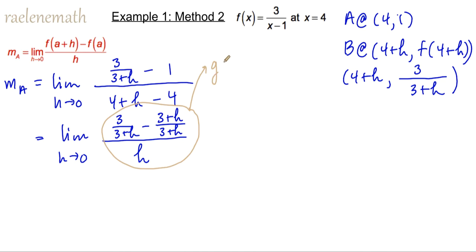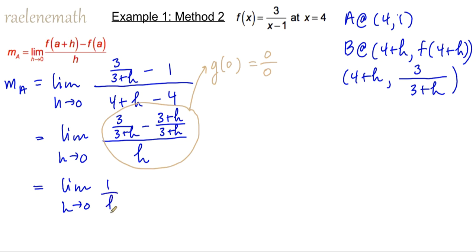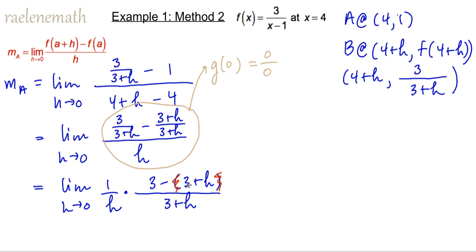So again, we have to find the source of the indeterminacy. We already started that process by getting a common denominator. I'm going to put that H denominator in front as the reciprocal 1 over H, multiplied by the rest of the fraction. The common denominator is 3 plus H, and then we have 3 minus, open bracket, 3 plus H. A really common source of mistake here is not to use brackets and then only changing the sign of the first term instead of both of the terms.